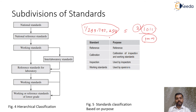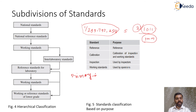Looking at the subdivision of standards, the first type is primary standards. Primary standards exist in only one place; there is only one material standard for primary standards. They are maintained at very precise atmospheric and temperature conditions and do not change their values. Primary standards are used only for comparison with secondary standards. The international yard and international meter are examples of standard units of length, though the modern meter is now the primary standard.